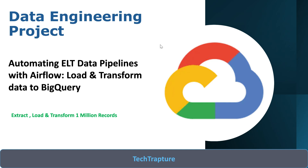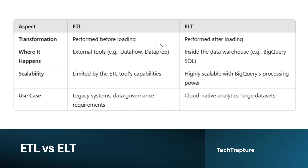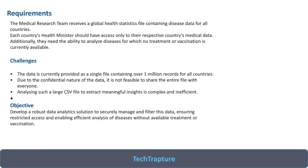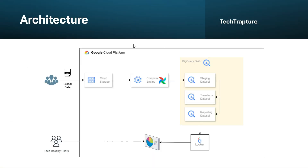Let's see what we did in the last video. We covered what ETL and ELT are, the difference between them, and our exact requirements. This was the architecture we designed. We loaded 1 million records from a CSV file in a Cloud Storage bucket using Airflow - first loading raw data into a staging dataset, then creating a separate table for each country, then creating views on those tables.